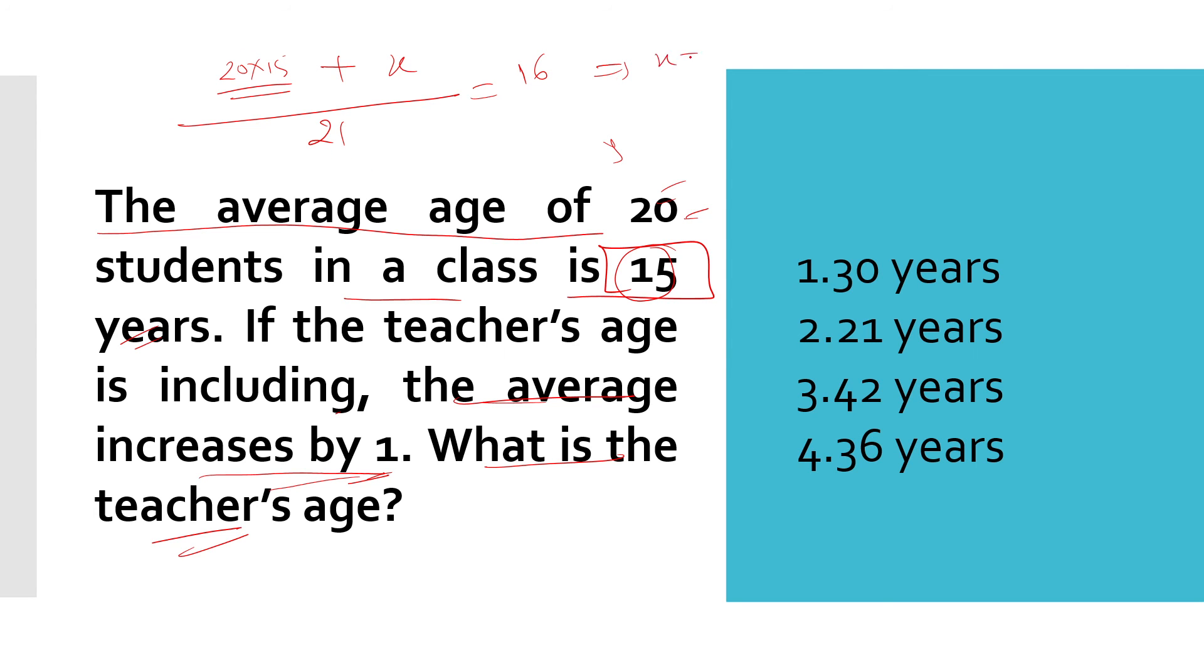So X equals 16 into 21 minus 20 into 15, which equals 36. The correct answer is 36.